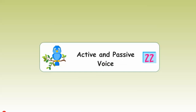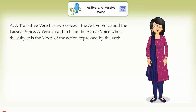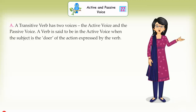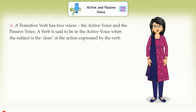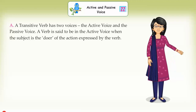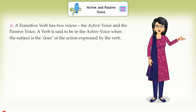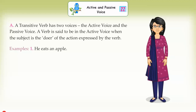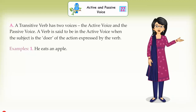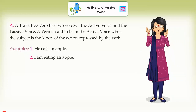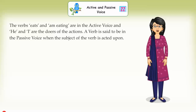Chapter 22: Active and Passive Voice. A transitive verb has two voices: the active voice and the passive voice. A verb is said to be in the active voice when the subject is the doer of the action expressed by the verb. Examples: 'He eats an apple,' 'I am eating an apple.' The verbs 'eats' and 'am eating' are in the active voice, and 'he' and 'I' are the doers of the action.